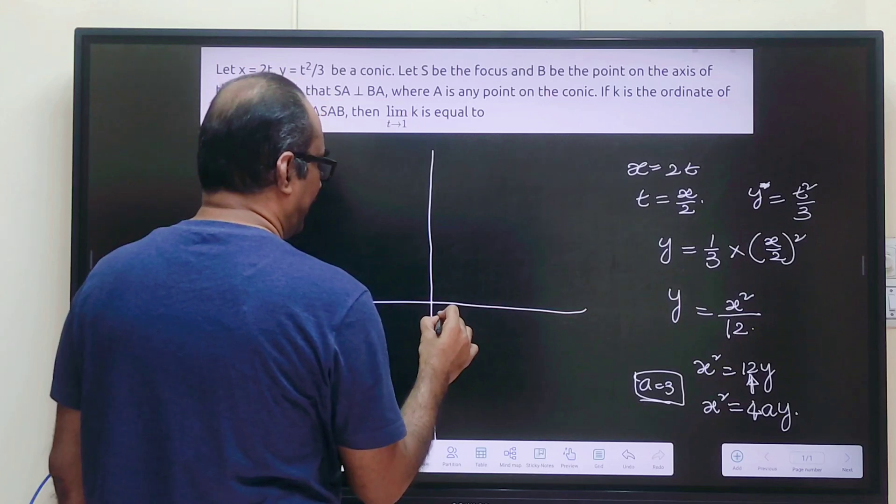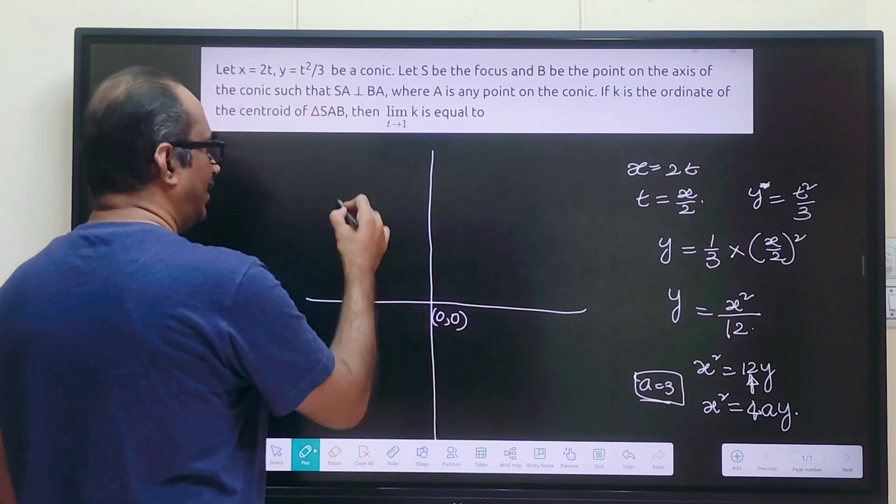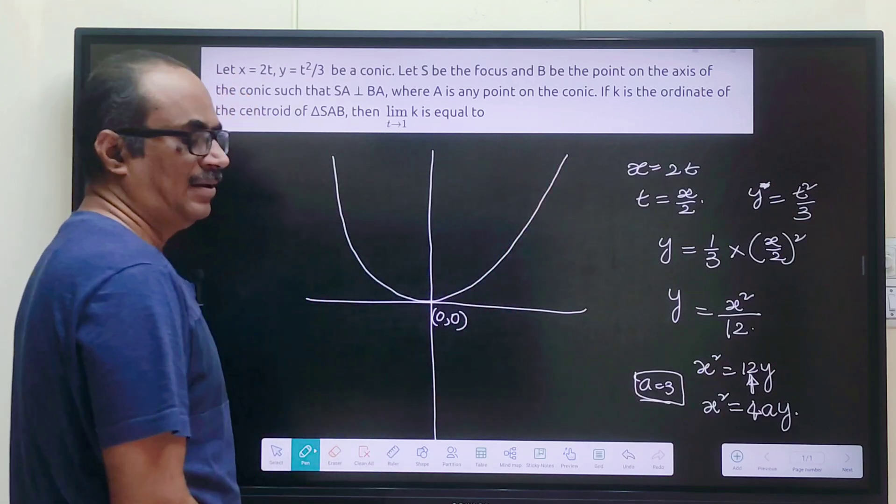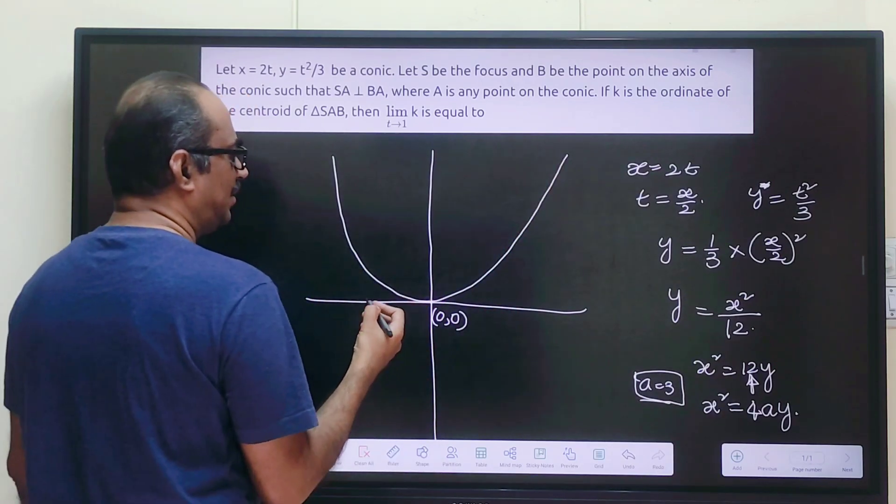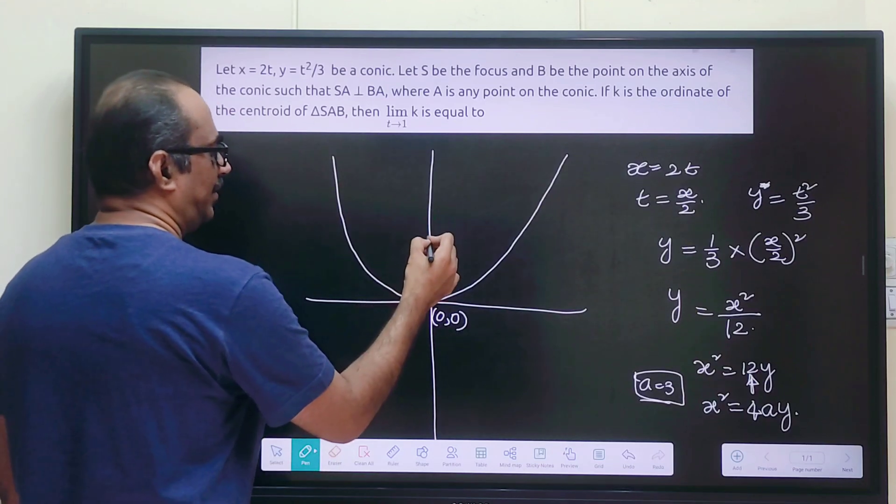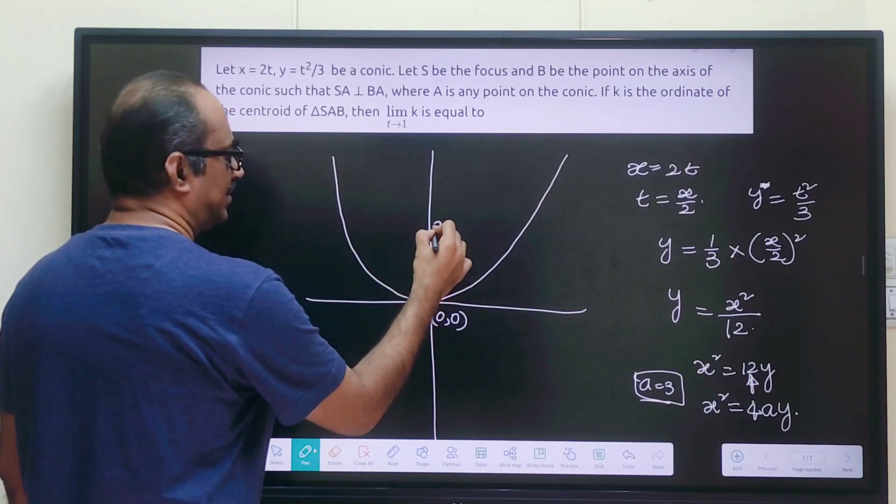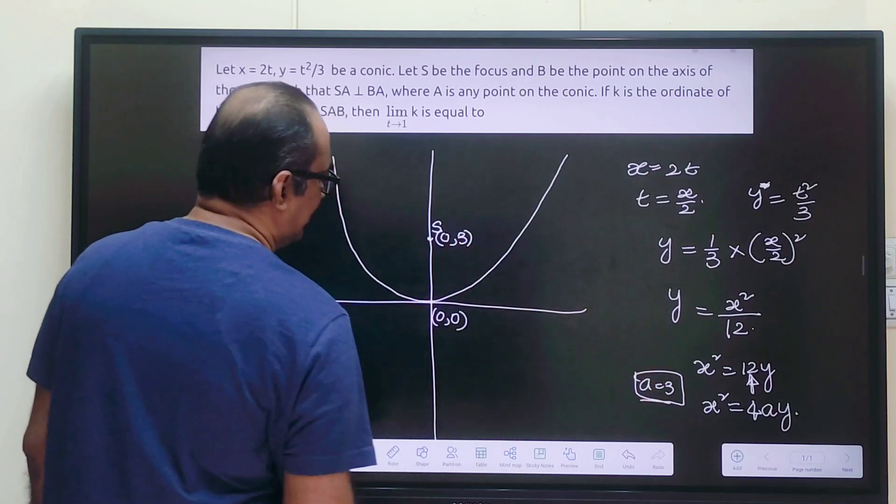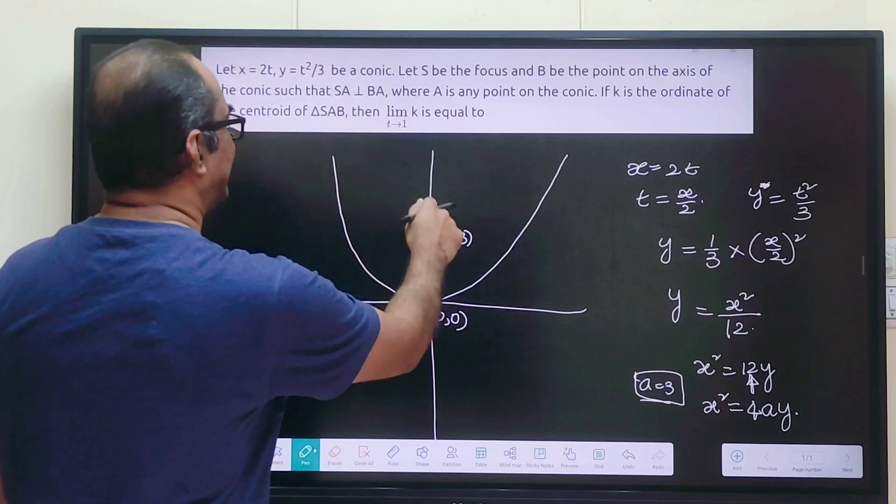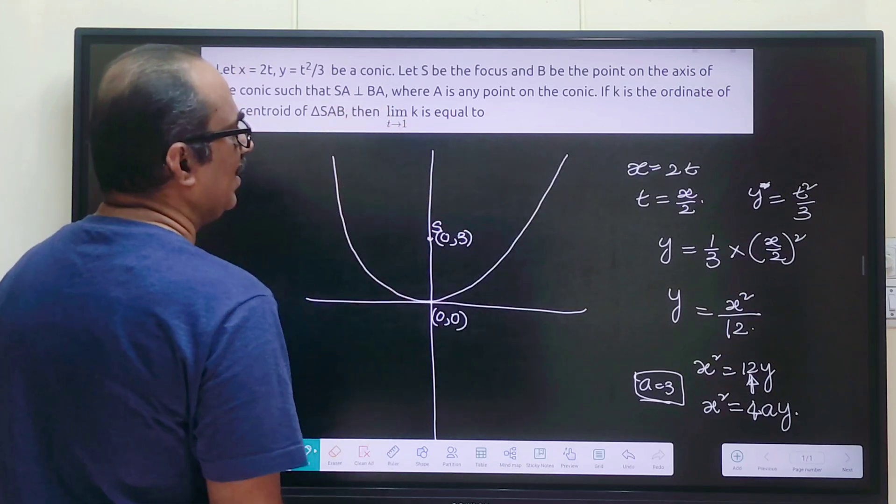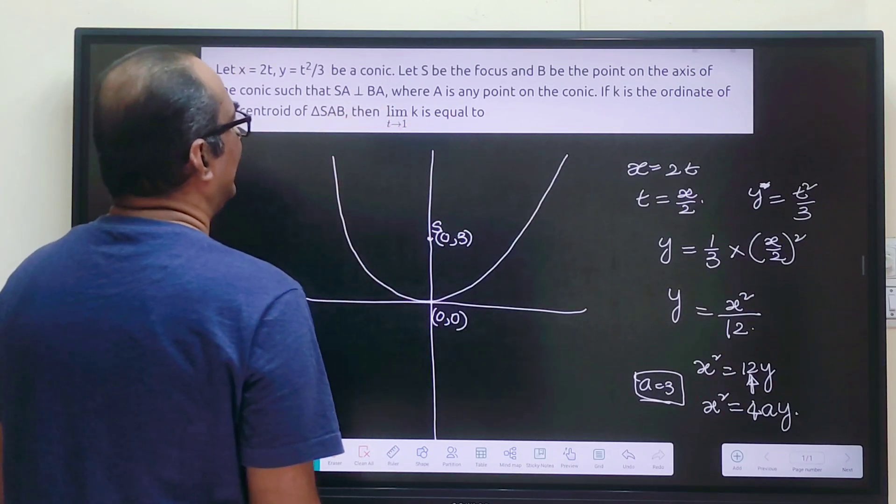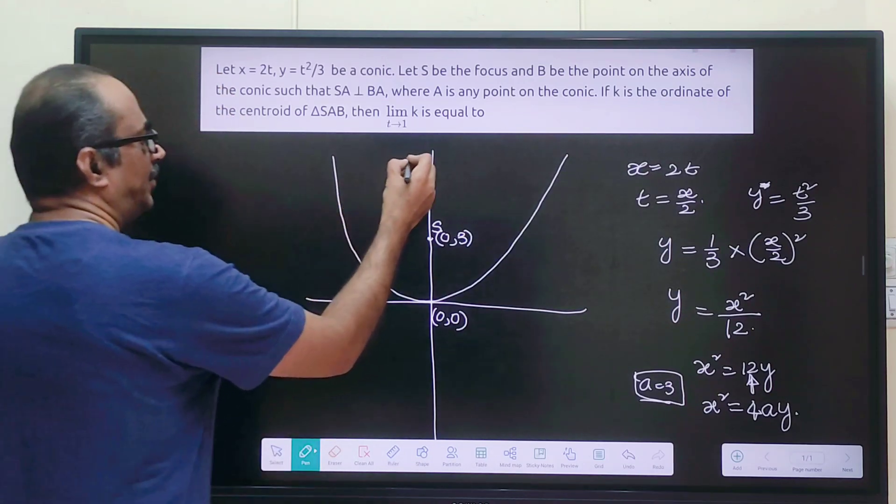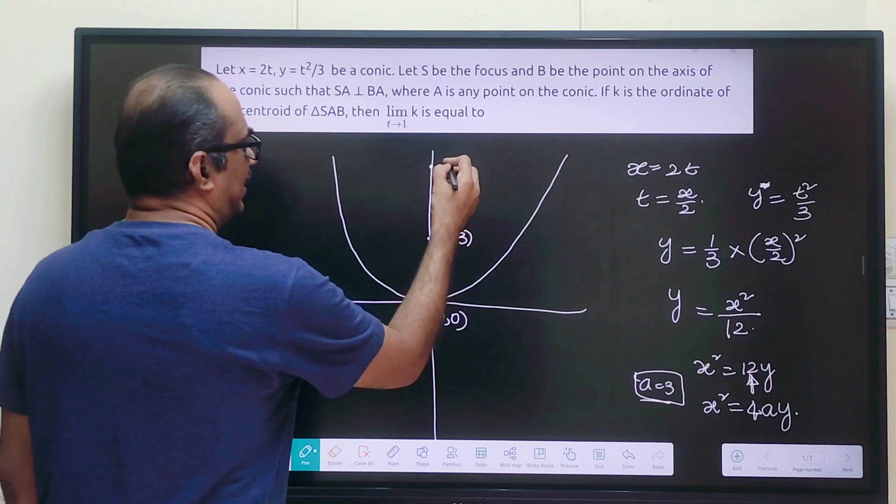Suppose we take this as origin (0,0), the parabola will be like this. It will be having vertex at (0,0) and let's say the focus is here. Yes, its coordinates will be (0,3) because a is 3, and we have SA perpendicular to BA where A is any point on the conic and B is a point on the axis of the conic. Let us say this is B.